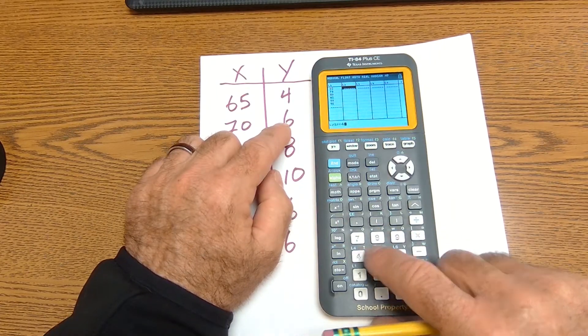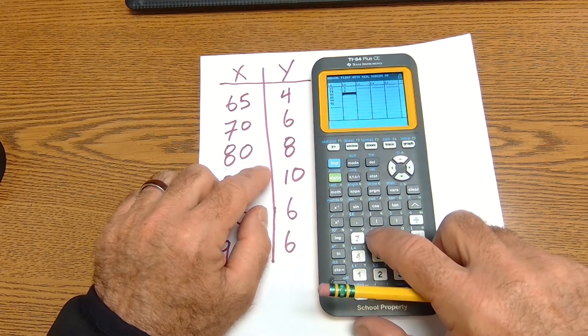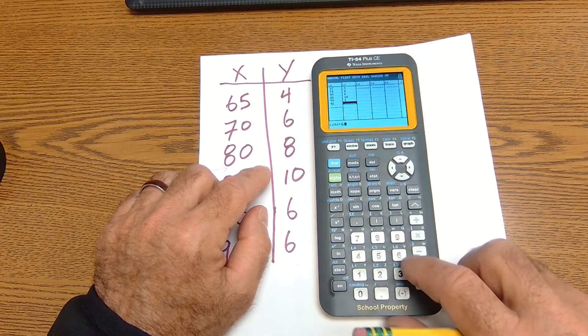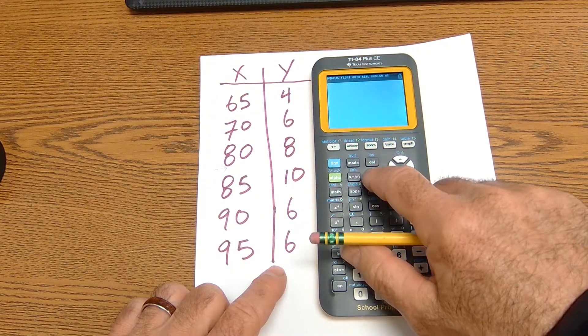This is going to be list two. I'm going to enter four, six, eight, ten, six, and six.